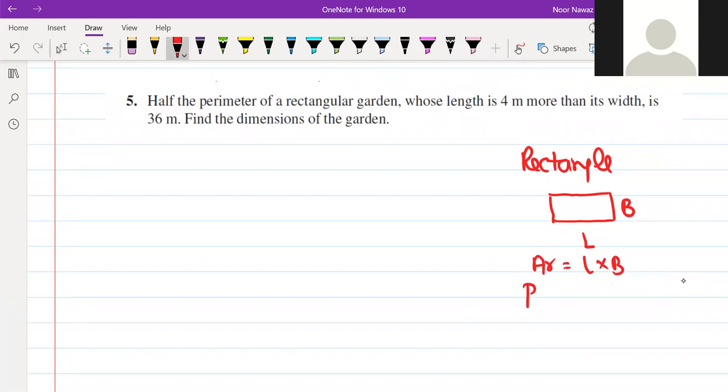The perimeter means length of total boundary. If it is a side length, this length and this breadth, it will be two times length and two times breadth. So twice L plus B.